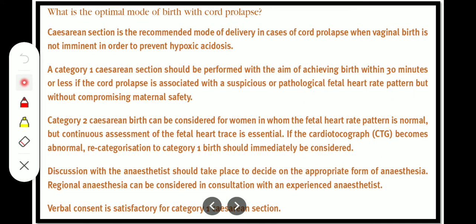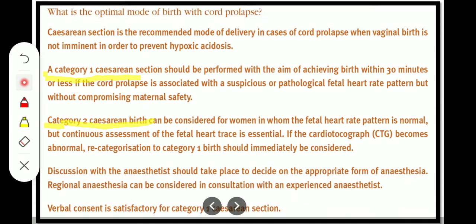What is the optimal mode of birth with cord prolapse? Cesarean section is the recommended mode of delivery in case of cord prolapse when vaginal birth is not imminent, in order to prevent hypoxic acidosis. We may have category 1 or category 2 cesarean section. A category 1 cesarean section should be performed with the aim of achieving birth within 30 minutes or less if cord prolapse is associated with a suspicious or pathological fetal heart rate pattern, but without compromising maternal safety.